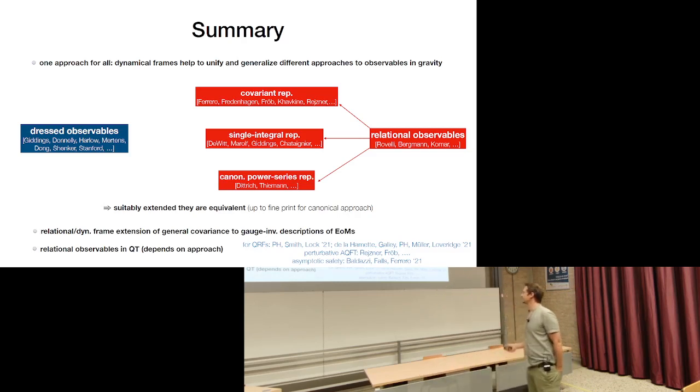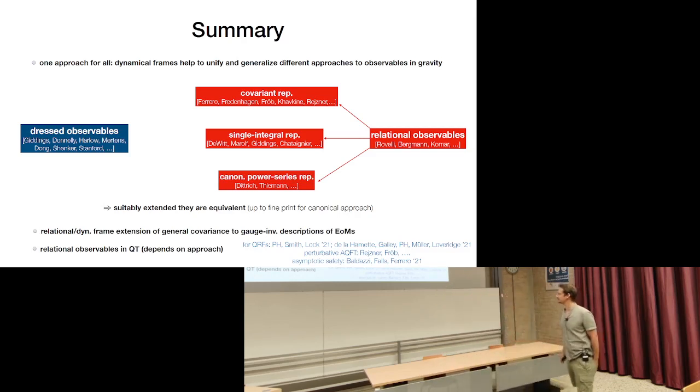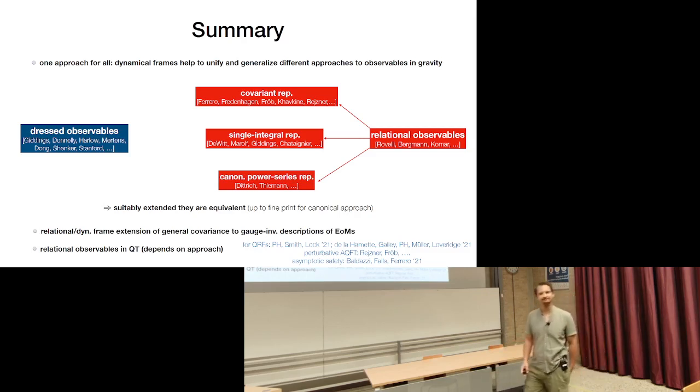So in summary, we now have one approach that encompasses basically all approaches to gravitational observables and unifies them, based on dynamical reference frames. When each approach is suitably extended, they are all equivalent — with some fine print for the canonical approach. Thanks.